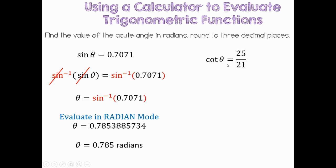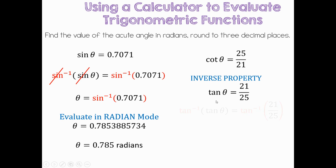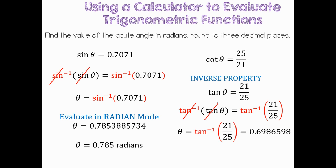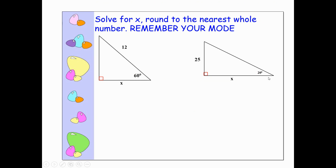There is no cotangent inverse button, and tan inverse is not the same as cotangent. Use the inverse identity to rewrite: if cotangent of theta equals 25/21, then tangent of theta equals 21/25. Then you can use tan inverse, which is available on your calculator. Still in radian mode, take tan inverse of both sides — that cancels tangent — leaving theta equaling the tan inverse of 21/25. That gives 0.6986598, which rounds to 0.699 radians. Please put that label since we don't have a little symbol like we do for degrees.